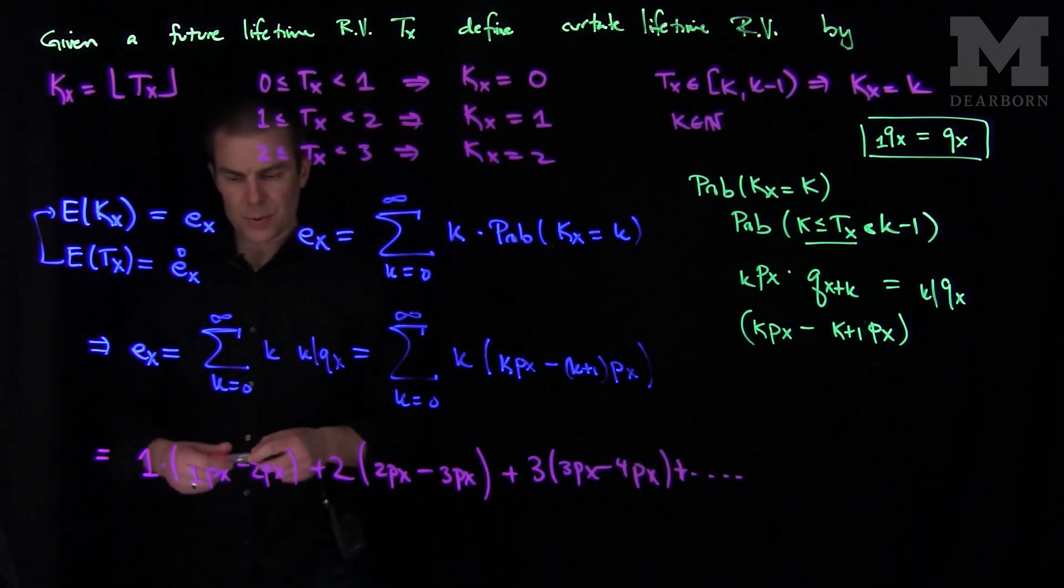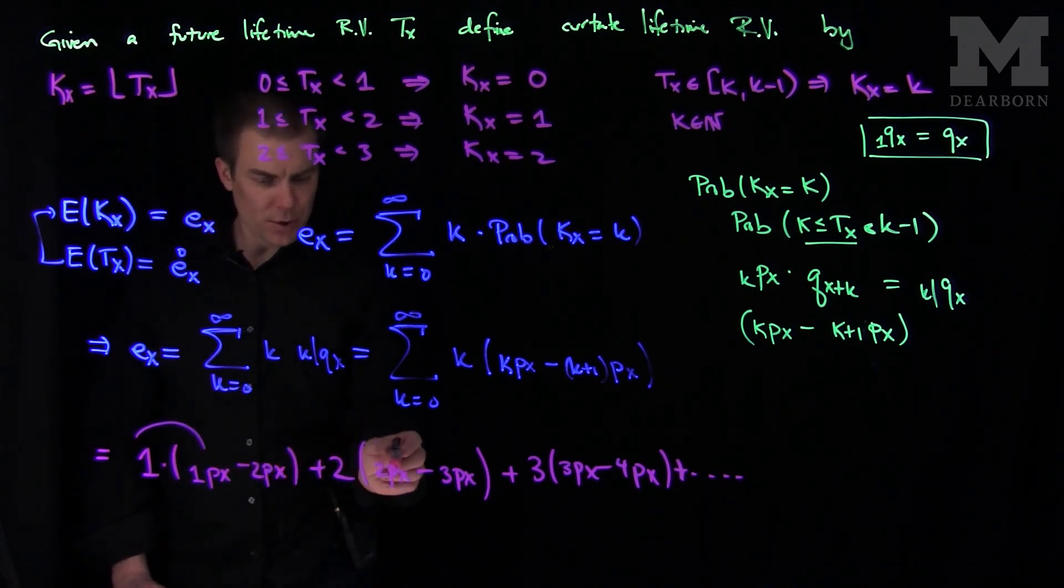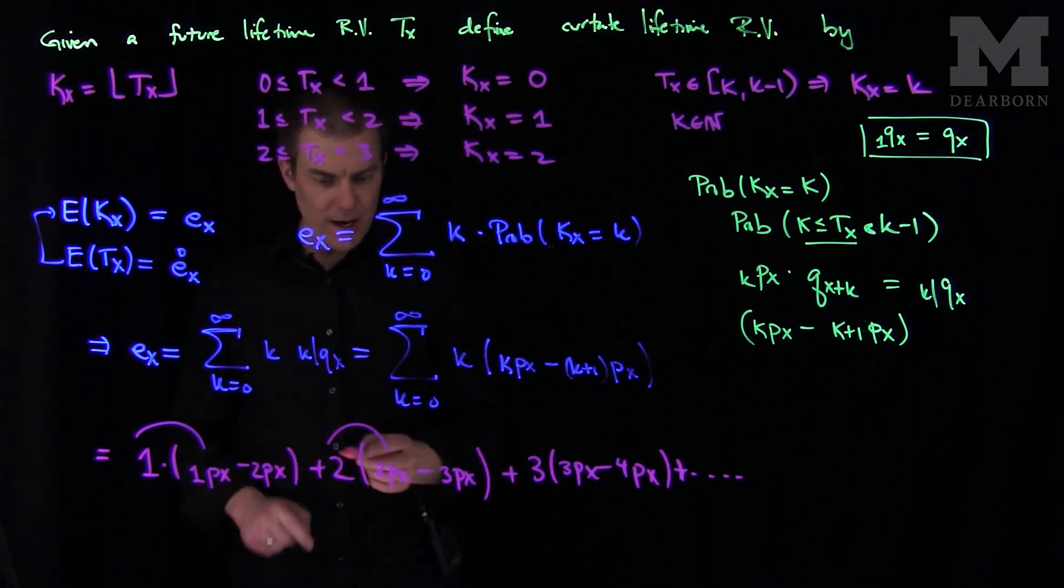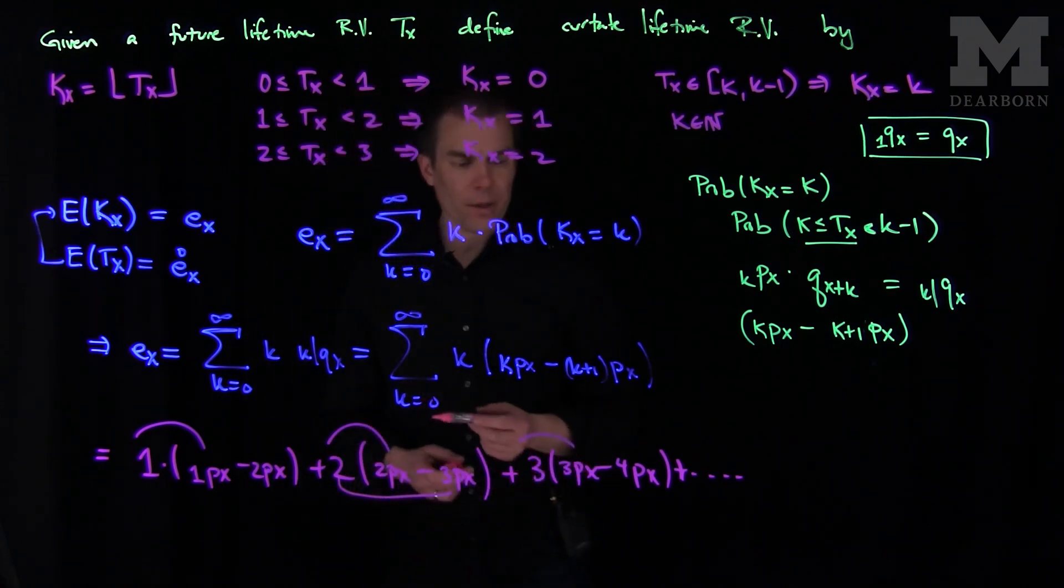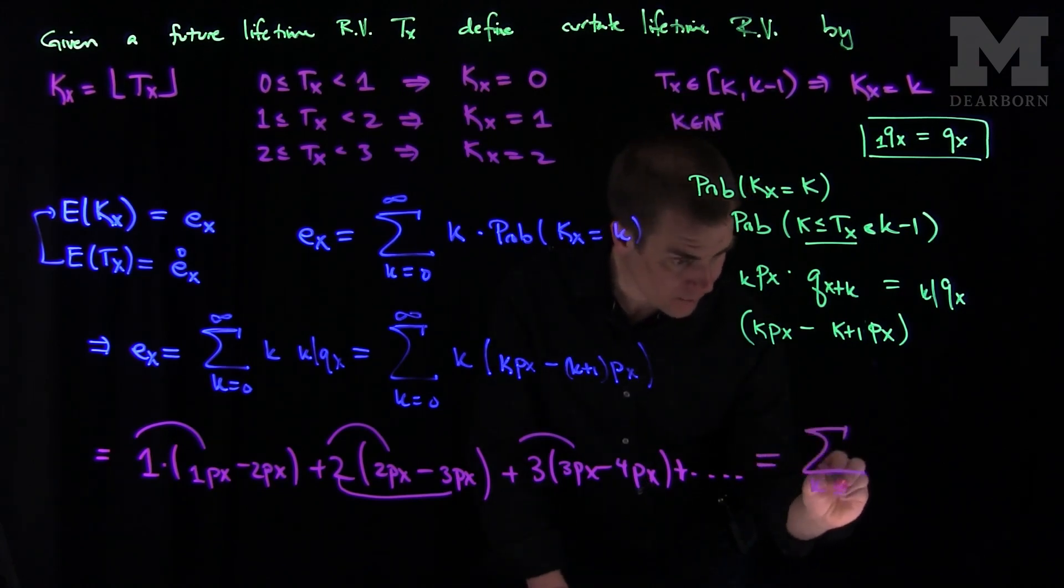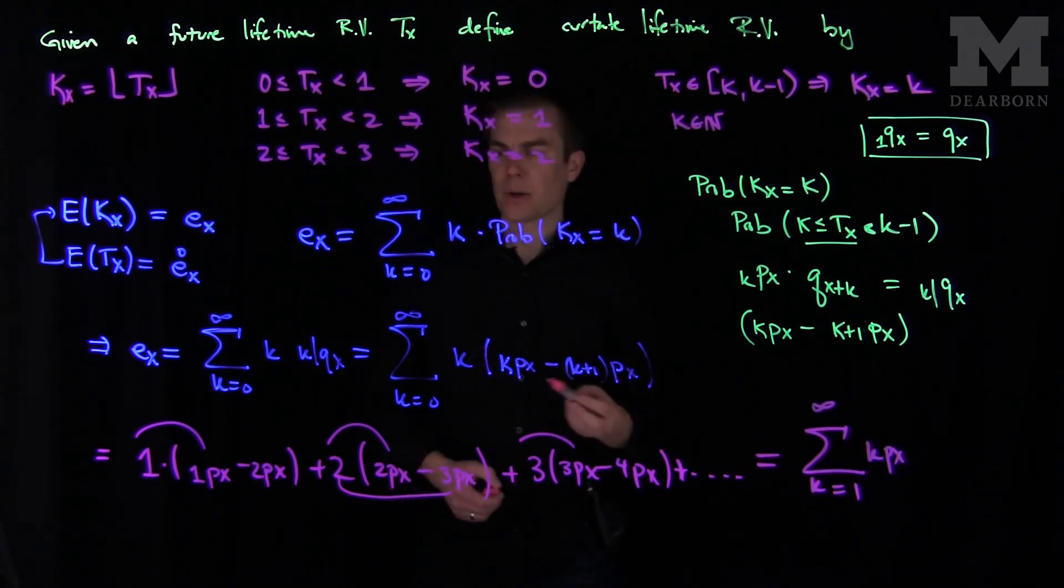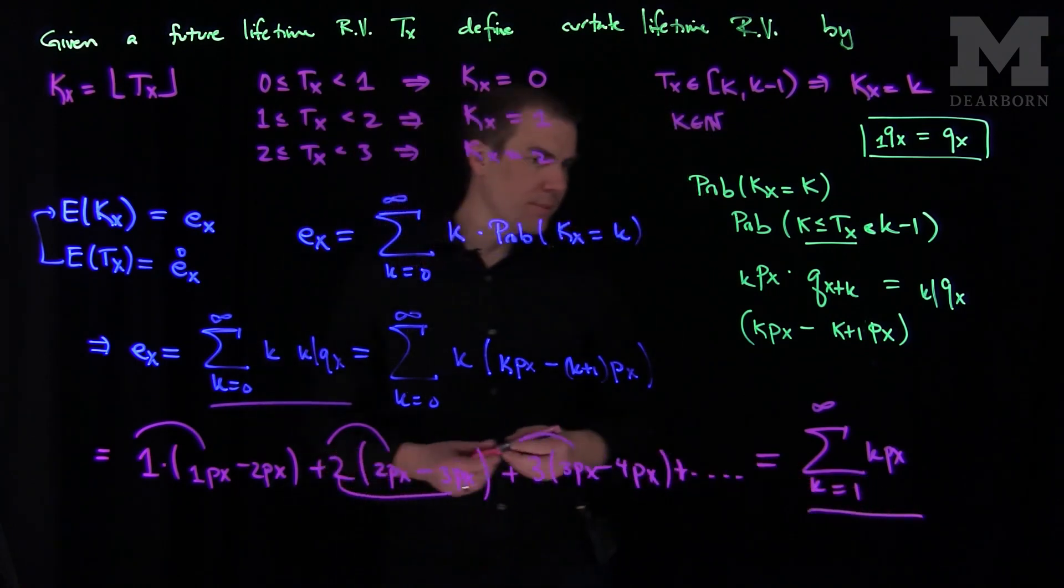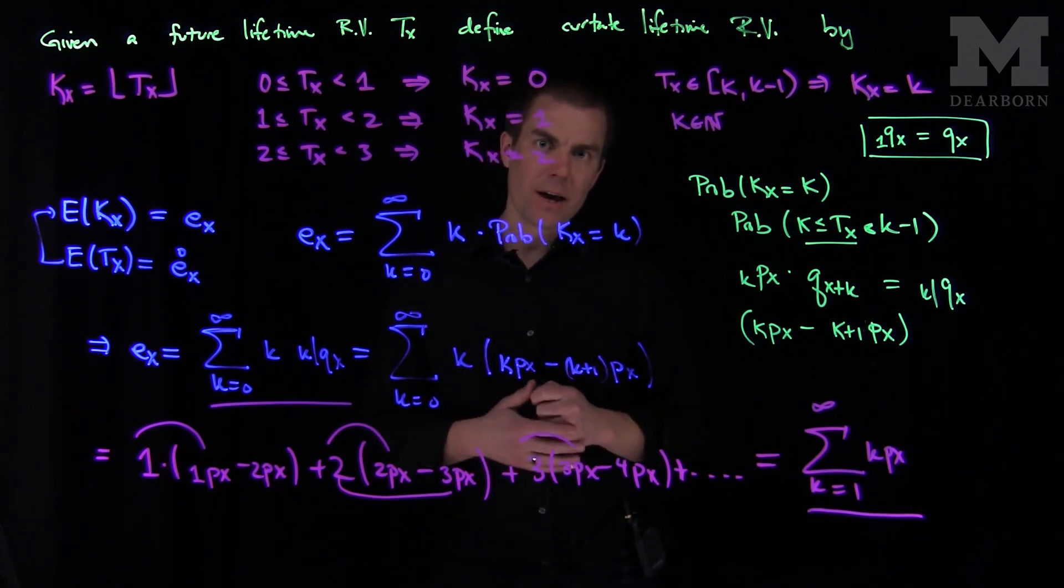From this we can see that we have a 1 px, then we have a negative 1, 2 px and a plus 2 px, so there's a cumulative effect of 2 px. Then I have a minus 2, 3 px and a plus 3, so we get exactly 1, 3 px. We can see actually that this is the sum, k goes from 1 to infinity of k px. So this formula is a representation of ex, and they both represent the expected curtate lifetime of a person age x.